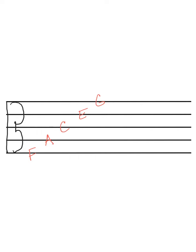Now our spaces fill in the notes that are in between the lines. So between F and A, we have the letter G, between A and C, we have B, between C and E, we have D, and between E and G, we have F. So G, B, D, F are our spaces.